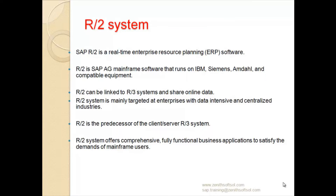SAP has two products: R/2 and R/3. R/2 is a real-time enterprise resource planning (ERP) software. It is an SAP AG mainframe software that runs on IBM, Siemens, Amdahl, and compatible equipment. We can link R/2 to R/3 systems and share online data. R/2 is mainly targeted at enterprises with data-intensive and centralized industries, and it is the predecessor of the client-server R/3 system.